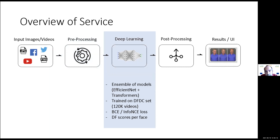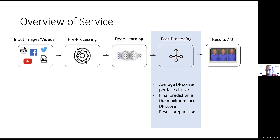Then we use a trained deep learning model — actually an ensemble of models, not a single model, but a combination based on state-of-the-art architectures like EfficientNet and Transformers. We have largely relied on the DeepFake Detection Challenge dataset for training, but we are going to enrich this with examples found in the wild. Thanks to these models, we produce deepfake scores for each face, then combine these scores based on face clusters and video shots to produce the final results for the user interface.